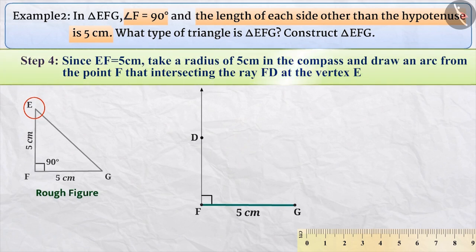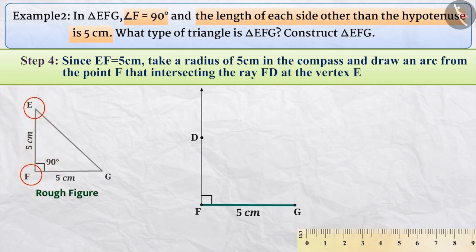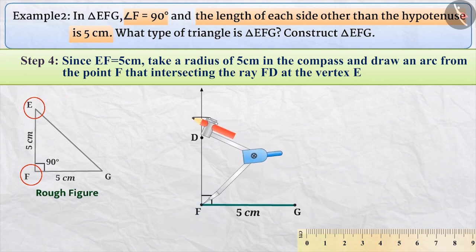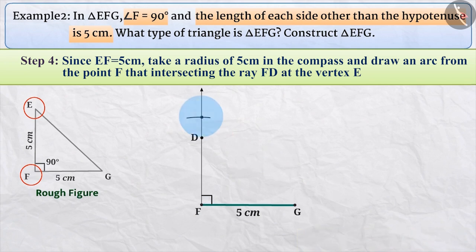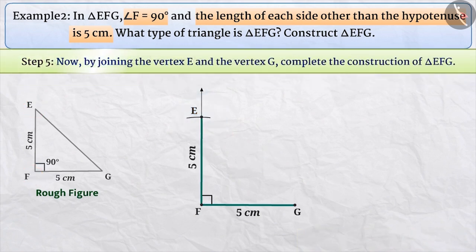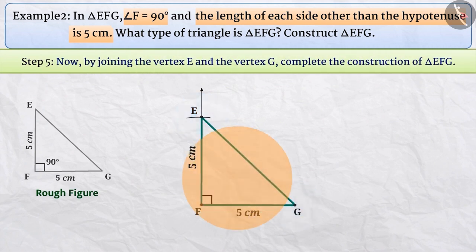Step 4: The length of side EF of triangle EFG is also 5 cm, meaning vertex F is at a distance of 5 cm from vertex E. Therefore, we will take a radius of 5 cm on the compass, take vertex F as the center, and draw an arc on line FD. The point of intersection is vertex E. Step 5: By joining vertices E and G, we complete the construction of triangle EFG.